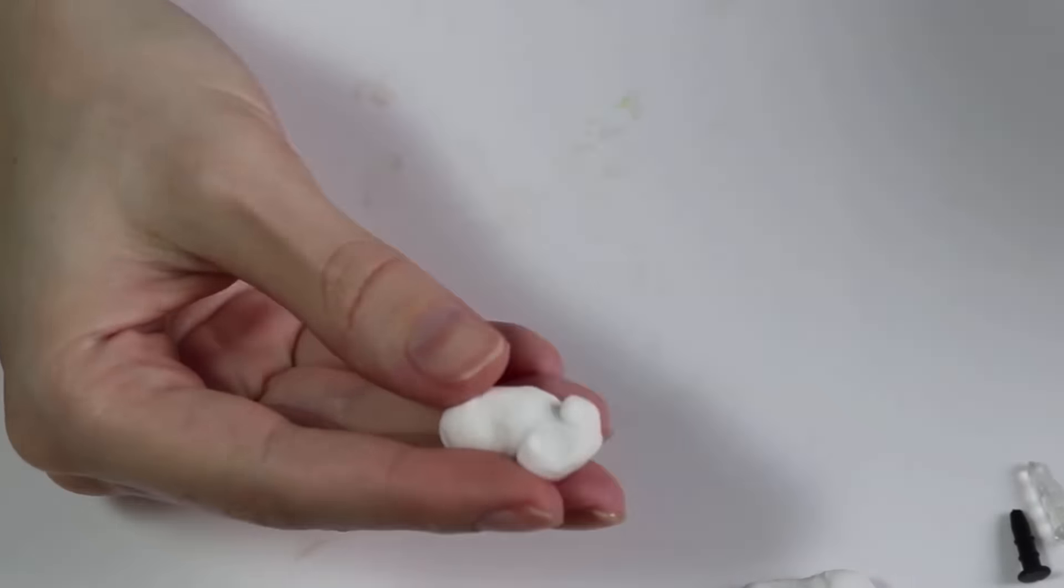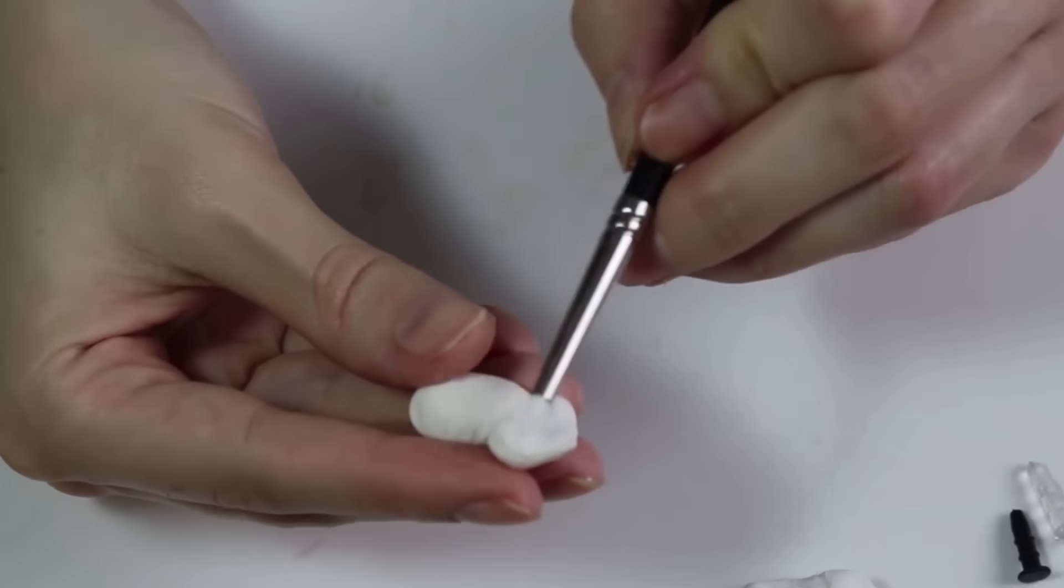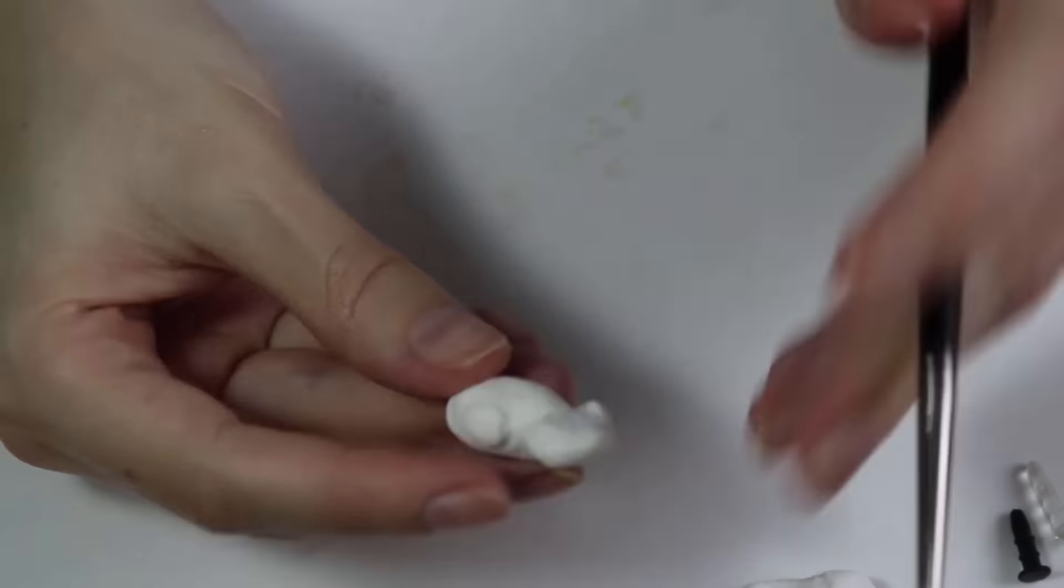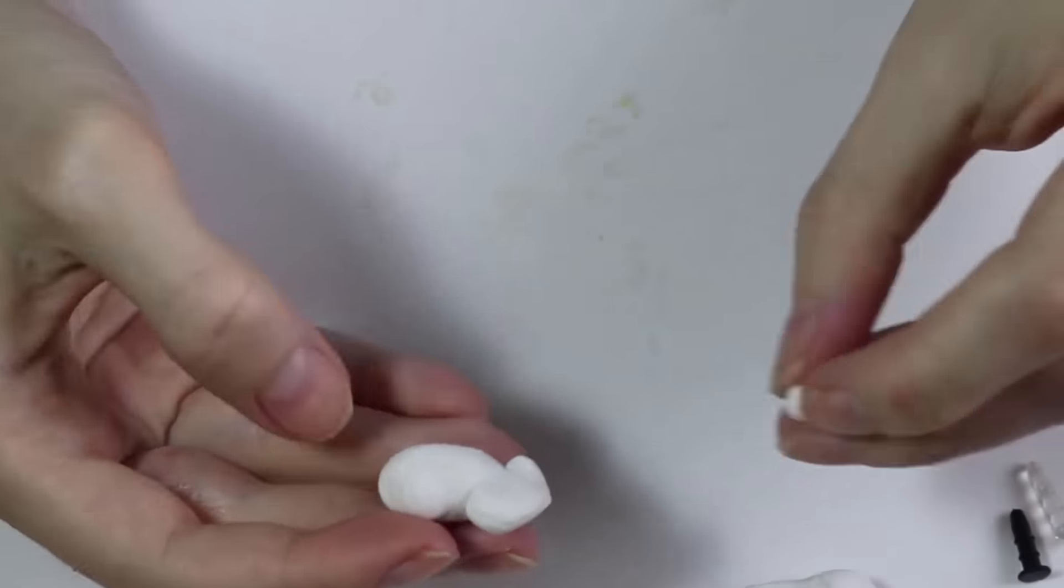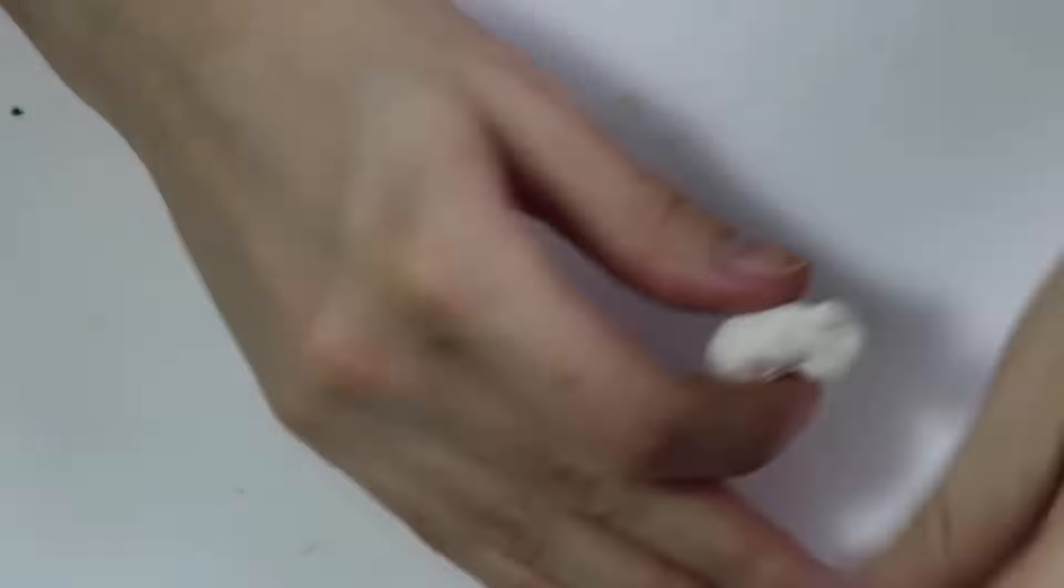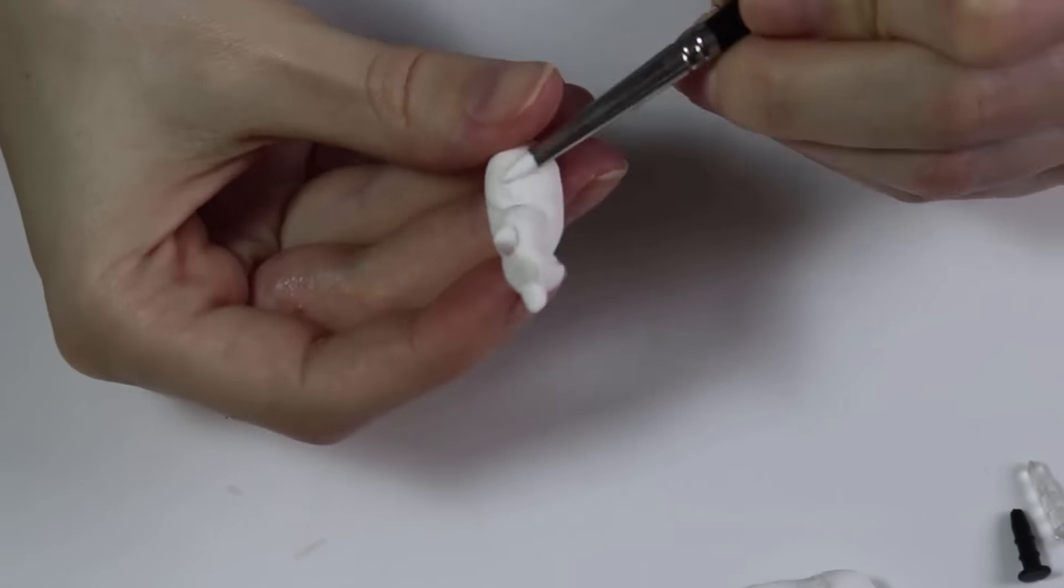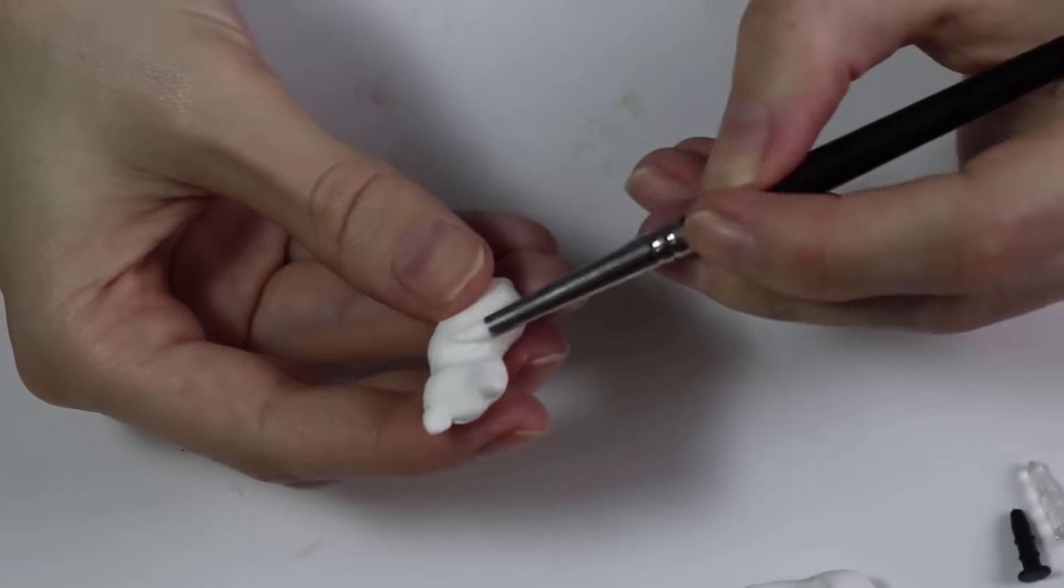And then give him some cheeks. And I'm giving him a little bit more of a belly. And then from here you're just going to keep molding it until you're happy with the shape and the outcome. So I put on his ears, and now I'm just smoothing out some pieces.